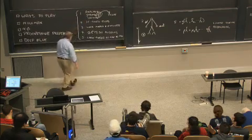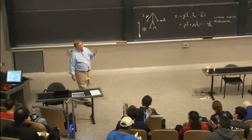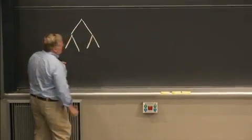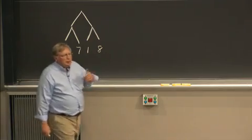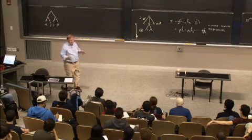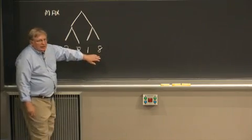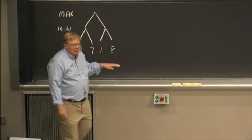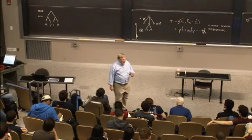I want to illustrate the method with the simplest possible tree — a branching factor of 2 and a depth of 2. There are some numbers down at the bottom representing the value of the board from the perspective of the player at the top. The player at the top wants to drive play toward the big numbers, so we'll call that player the maximizing player. There's another player — the minimizing player — who hopes play will go toward the smallest possible number. Hence the name Minimax.